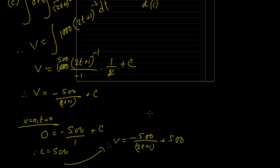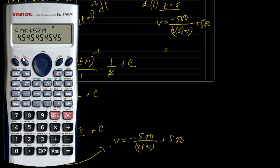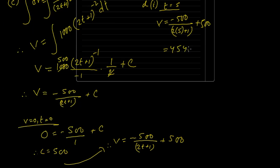So t equals 5, we can find v equals minus 500 divided by 2, 5 is 10 plus 1 plus 500. So let me plug in the calculator. I got 454.54.54. That's very strange. It looks like an interesting pattern.